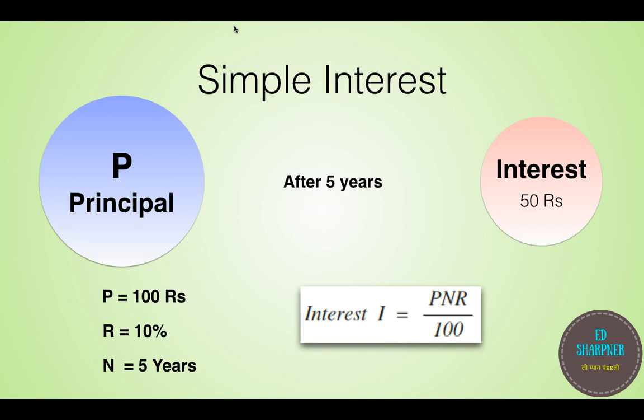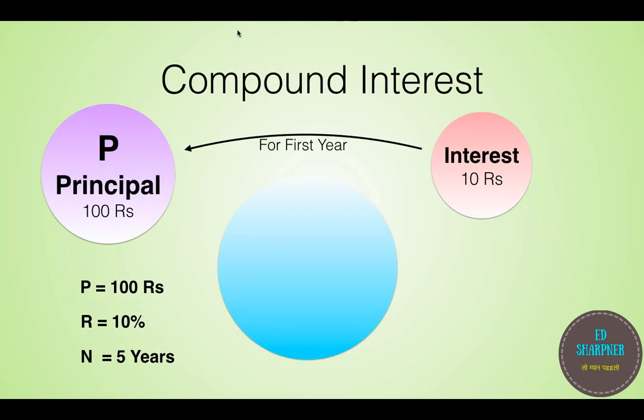Now let us look at the compound interest. Compound interest gained popularity as soon as people understood one flaw in the measurement of simple interest, which reduced their interest considerably. This flaw as we can see in the previous problem, we got the interest of 50 rupees.